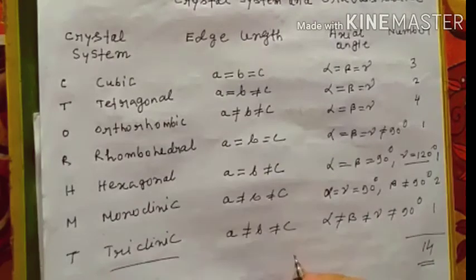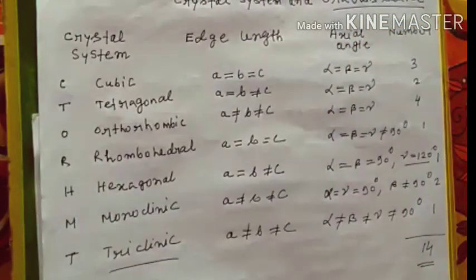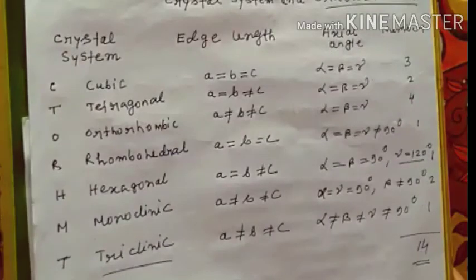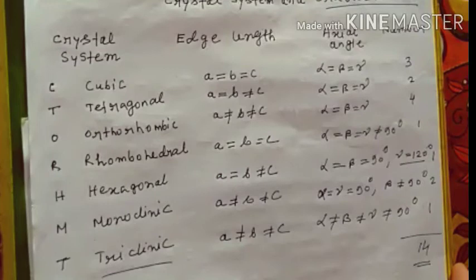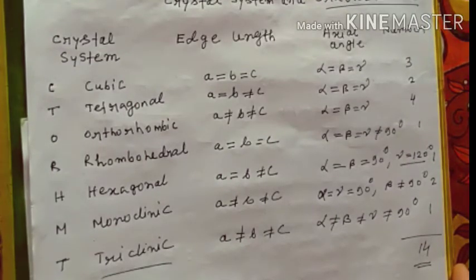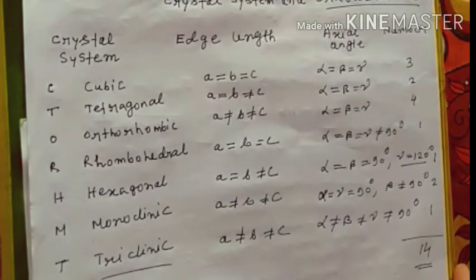These lattice are called Bravais lattice. So by this way you can remember the different crystal systems with their edge length and axial angle. It will help you to score in different competitive exams.